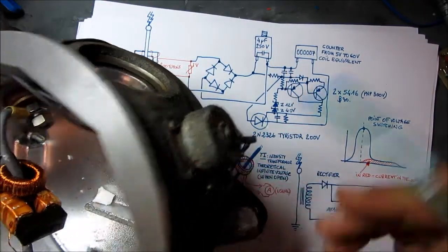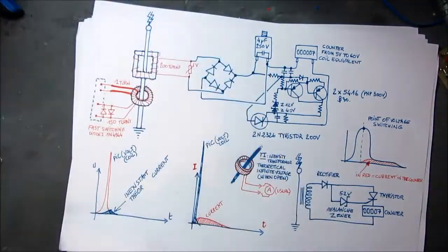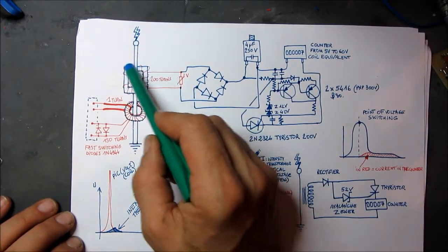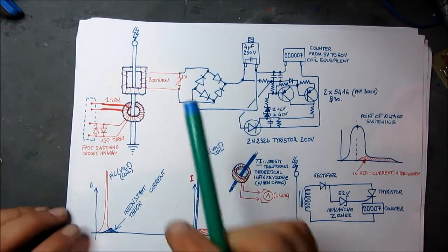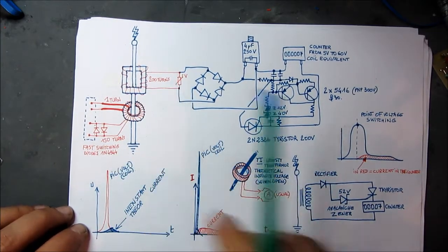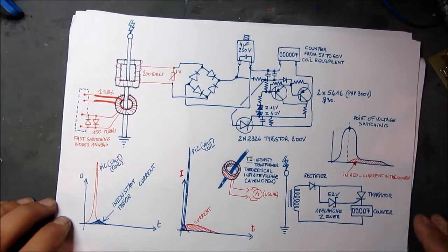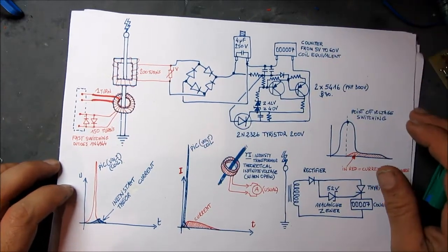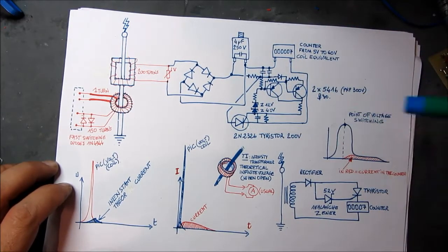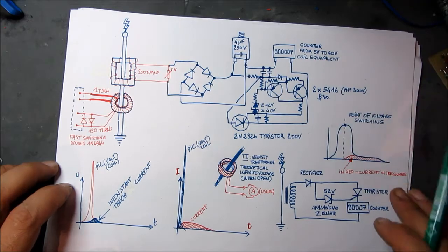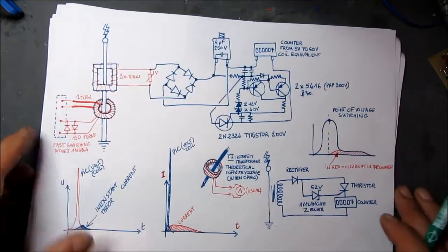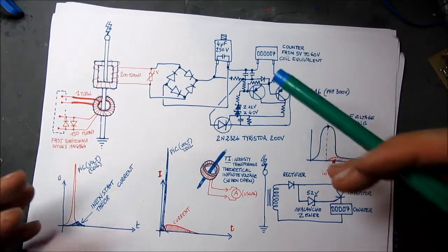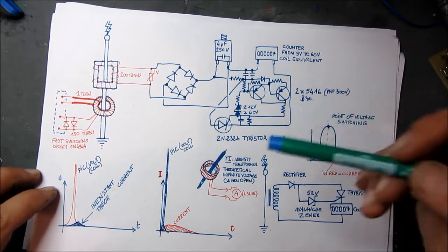As you can see, you have this square toroidal transformer which has approximately 200 turns. You have here a varistor, and this varistor is a little voltage limitation. You have a rectifier, and let me try to explain how to understand this schematic.